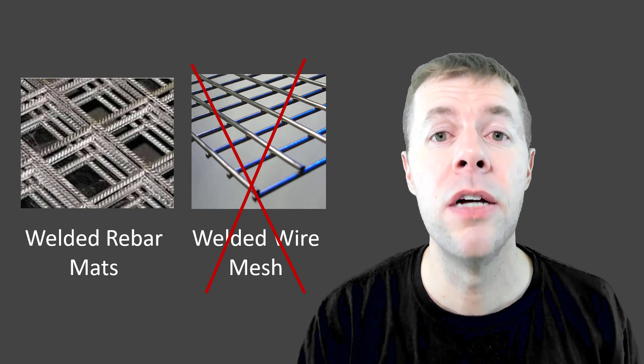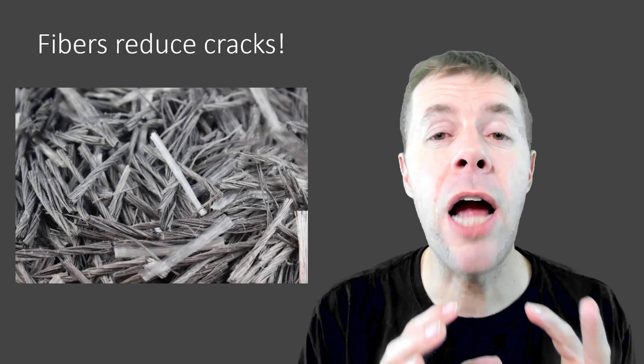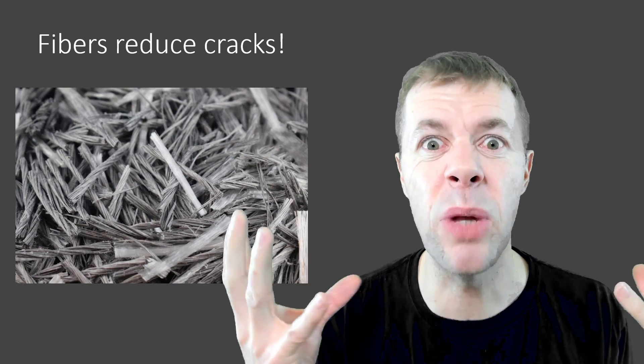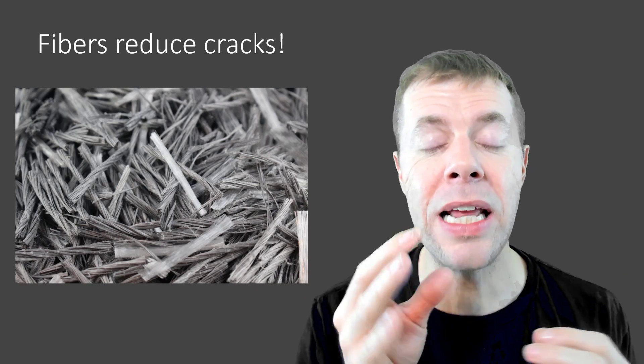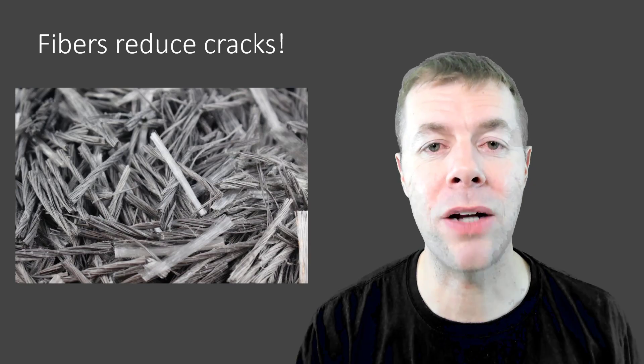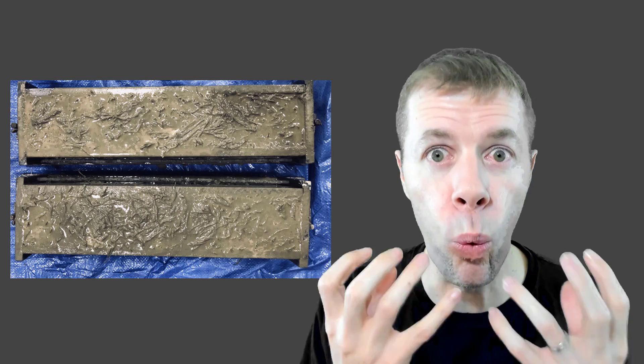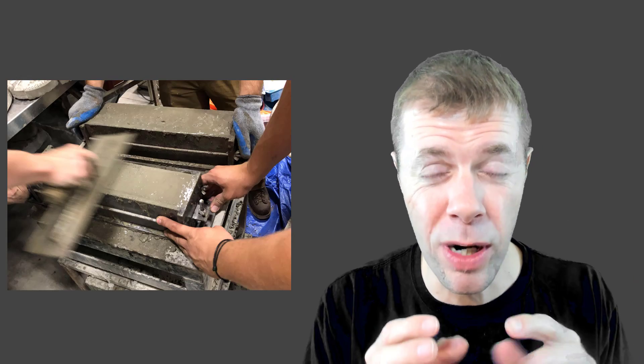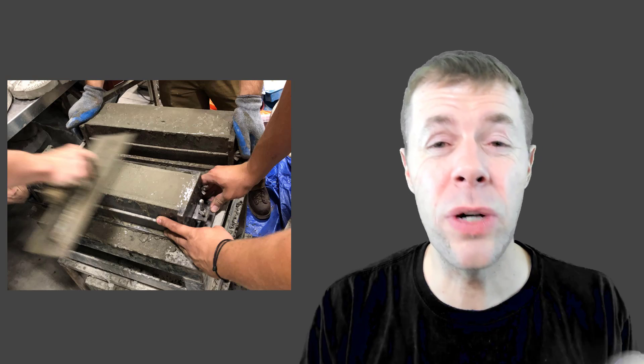Welded rebar mats help keep our cracks smaller in our concrete. Fibers are also an amazing tool — they are reinforcement you can put randomly all over your concrete and again help keep your cracks small. You have to be a little careful though, because you need quite a bit of energy and work to get a smooth surface on your concrete if you use fibers. Here's an example of some beams that we cast — you can see the fibers. We had to put them on a vibrating table and really work them hard to get some surface on there, get some cream at the top, and not see those fibers.